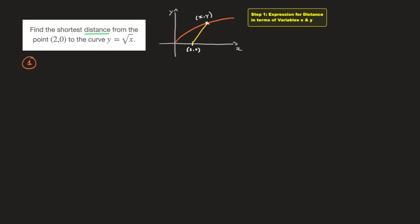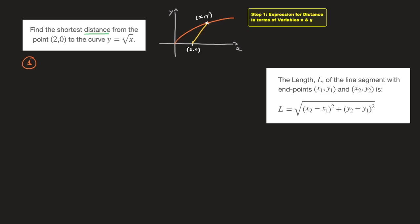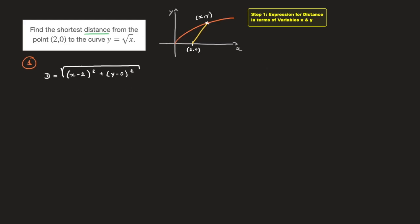What we're actually trying to do is minimize the length of a line segment. Using the distance formula with endpoints x1, y1 and x2, y2, we can state that the distance d is equal to the square root of (x minus 2) squared plus (y minus 0) squared. Opening up each pair of parentheses leads to d equals the square root of x squared minus 4x plus 4 plus y squared. That's our first step done — we have an expression for the quantity in terms of variables x and y.